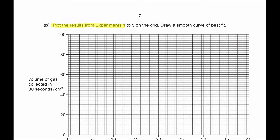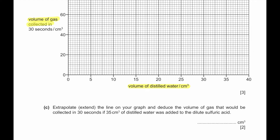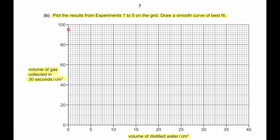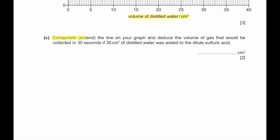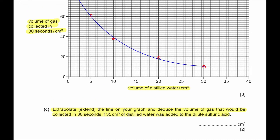Part B: Plot the results from experiments 1 to 5 on the grid and draw a smooth curve of best fit, with volume of distilled water (cm³) on the x-axis and volume of gas collected in 30 seconds on the y-axis. Extend the line and extrapolate at 35 cm³ of distilled water — the deduced volume of gas collected would be approximately 9 cm³.